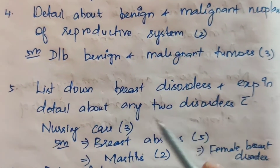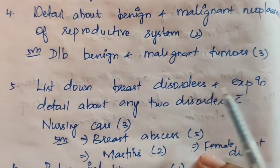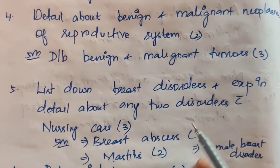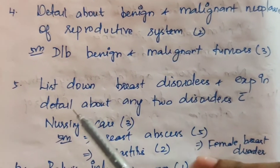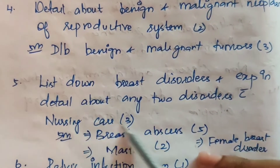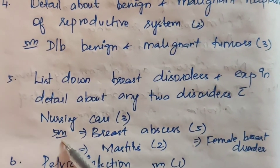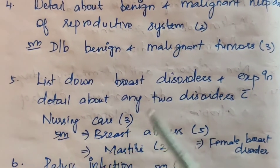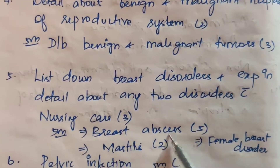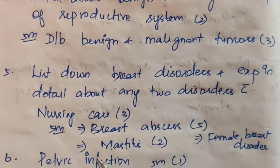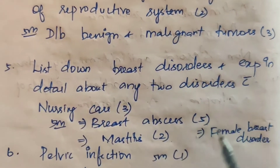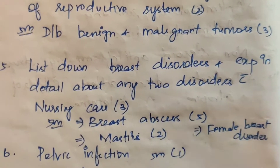Fifth one: list down breast disorders and explain in detail about any two disorders with nursing care — three times. In 5 marks: breast disorders, breast abscess five times, mastitis two times, and female breast disorders.